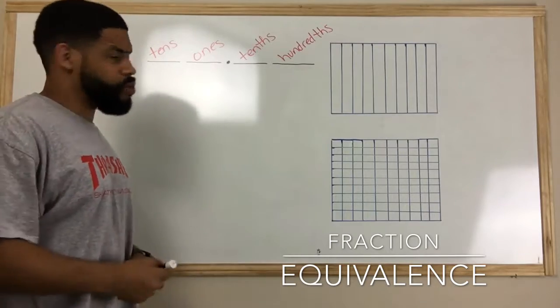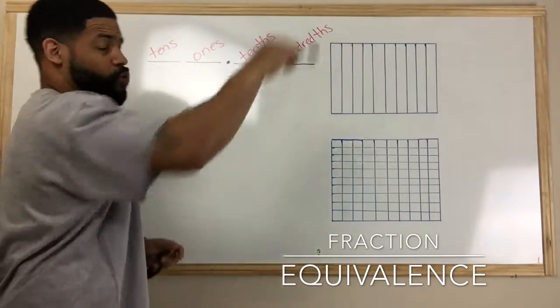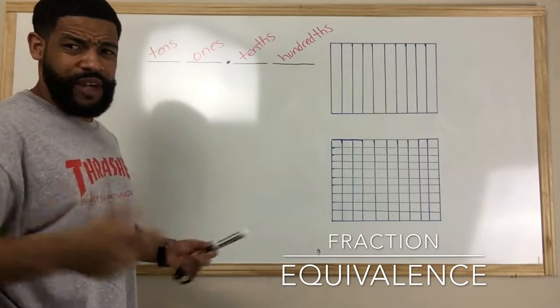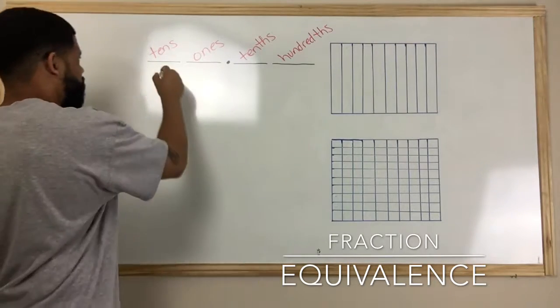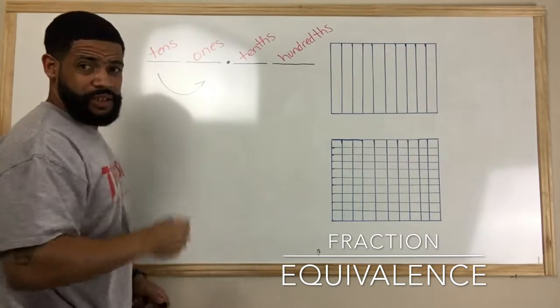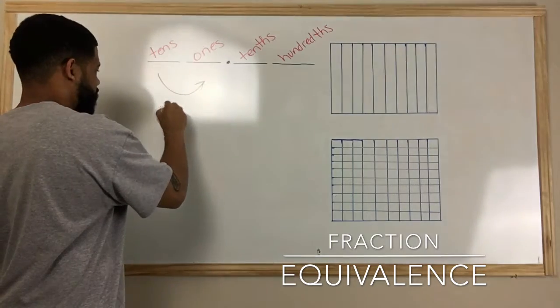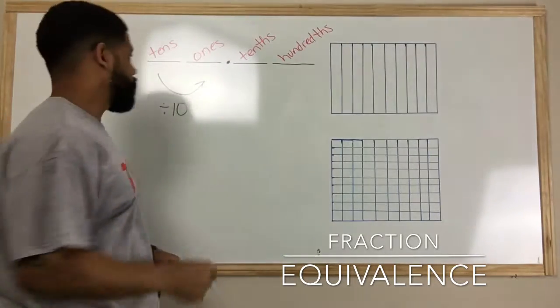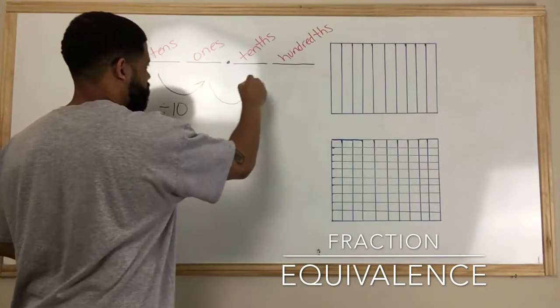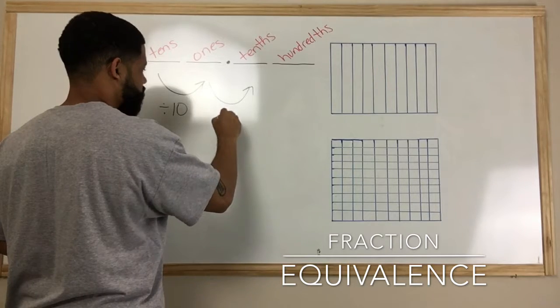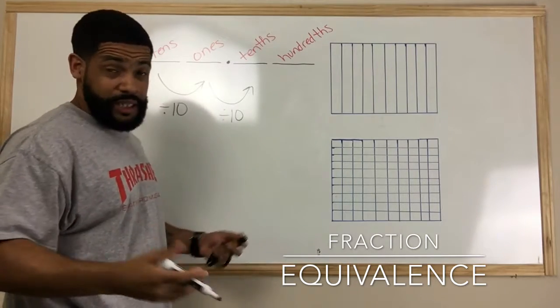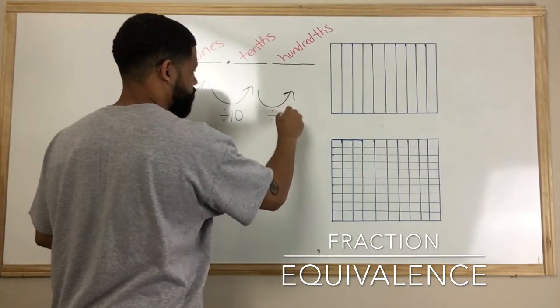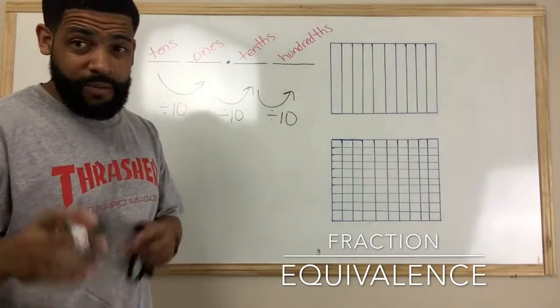So as I go to the right in place value, I'm actually dividing by 10. So if I start here and when I go from tens to ones, I'm actually dividing by 10. 10 divided by 10 is 1. Okay, so then when I go from ones to tenths, I'm dividing by 10 again. And then if I go from tenths to hundredths, I'm dividing by 10. So as we move over one place value to the right, you're dividing by 10.